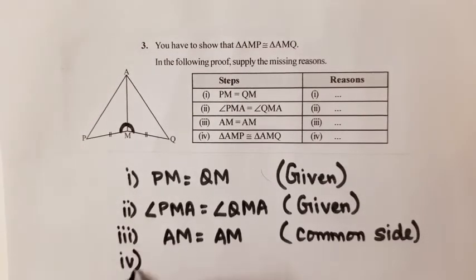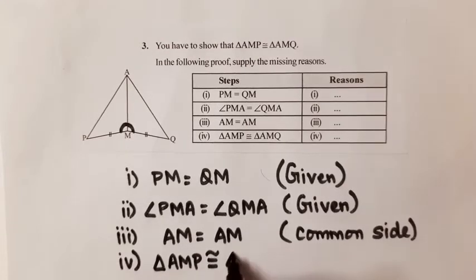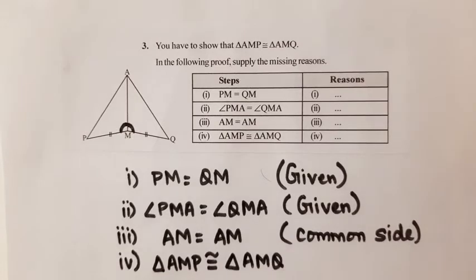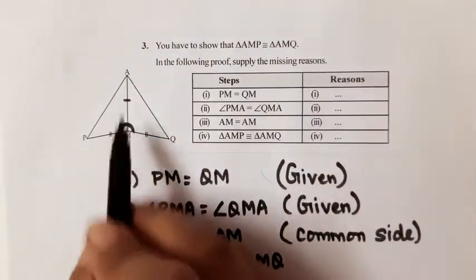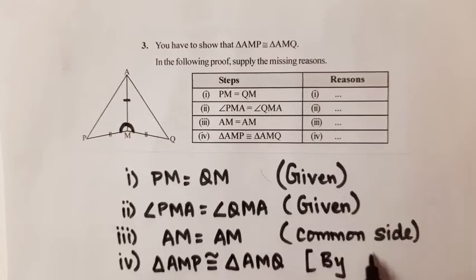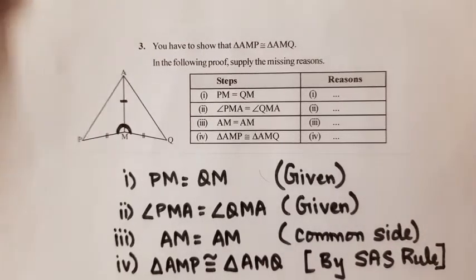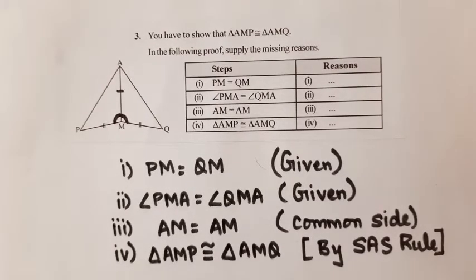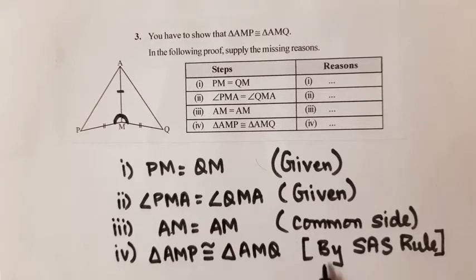The fourth part says triangle AMP is congruent to triangle AMQ. With the three given pairs of equal parts, we were talking about two corresponding sides and the included angle. So by the SAS congruence rule, the triangles are congruent. PM equal to QM because it was given; AM equal to AM as the common side; and the triangles were congruent by SAS congruence rule.